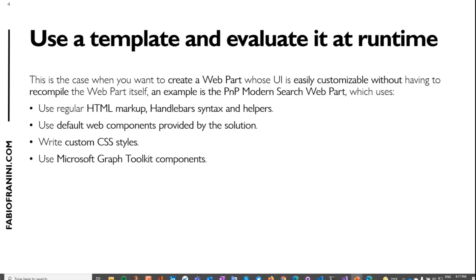When you want to use a template and evaluate it at runtime — for example using Handlebars — take the PnP modern search web part as an example. This web part uses Handlebars syntax, some helpers, HTML and CSS to build the UI. If you want complex controls, you can use web components provided by the solution and Microsoft Graph Toolkit components, which are web components. The same web components inside the modern search web part are built as a wrapper around Fluent UI React components.